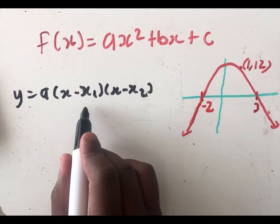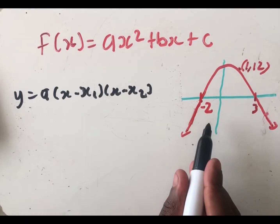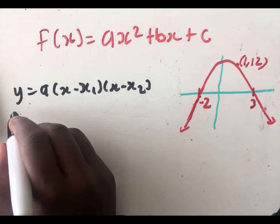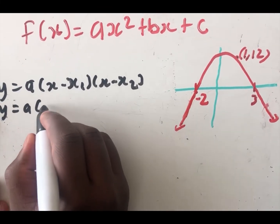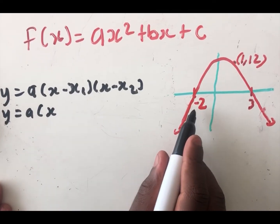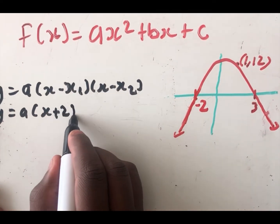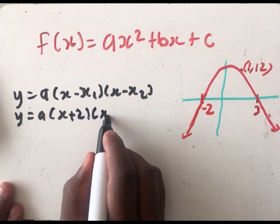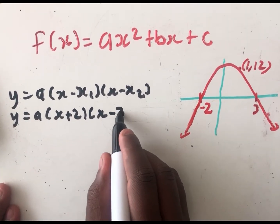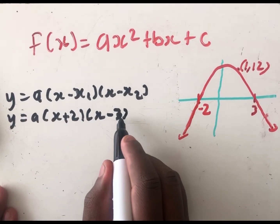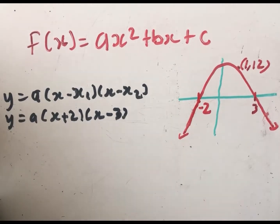Since we're given the x-intercepts, we use the x-intercept form: y = a(x − x₁)(x − x₂). Substituting the x-intercepts, it becomes y = a(x + 2)(x − 3).